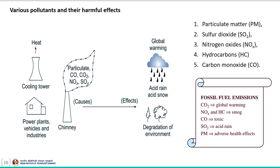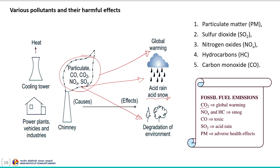Now, after learning about the pollutants, let us discuss them and their harmful effects. As we discussed earlier, the emission of pollutants from the burning of fossil fuels causes acid rain, acid snow and global warming. The fossil fuel emission — mainly CO2 — causes global warming. NOx and hydrocarbons cause smog. Carbon monoxide is toxic. Sulfur dioxide causes acid rain, and particulate matter causes adverse health effects. Let us now discuss these various pollutants one by one.